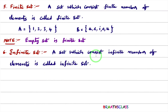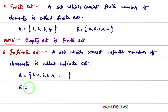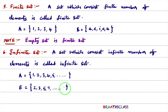Now, infinite set. A set which consists of an infinite number of elements is called an infinite set. For example, collection of all natural numbers — A = {1, 2, 3, 4, ...} — has infinite elements, so it is an infinite set. Similarly, collection of all prime numbers — B = {2, 3, 5, 7, ...} — also has infinite elements, so these are examples of infinite sets.